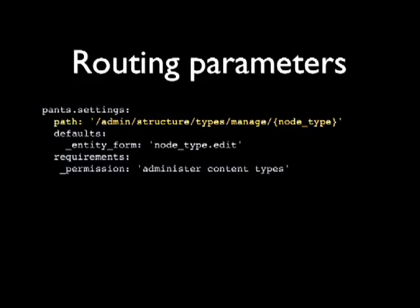Routing parameters. Before in Drupal 7 you had %node, which magically called node_load. We found that 99% of every loader was for an entity type, so now the router looks for curly braces — if the placeholder name matches an entity type, it tries to load it. For example, admin/structure/types/manage/{node_type} — if the string 'article' is provided, it loads the full article node type object. You can also add your own upcasters for other types.